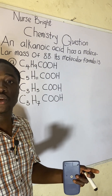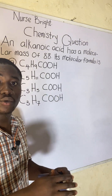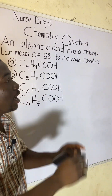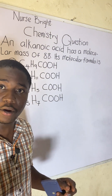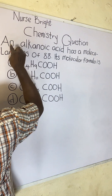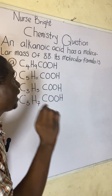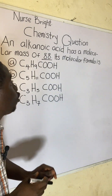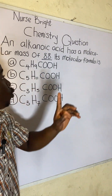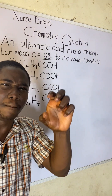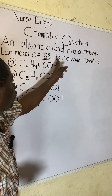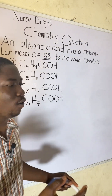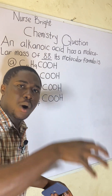You came across this question in your chemistry exam, whether you are preparing to write the JAMB exam, post-UTME examination, or even if you are in your first year in a university. This question is actually very easy. The question says: an alkanoic acid has a molecular mass of 88. They are asking us: what is the molecular formula of this compound?